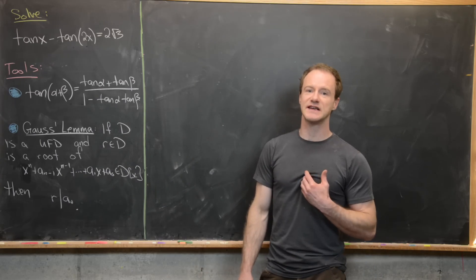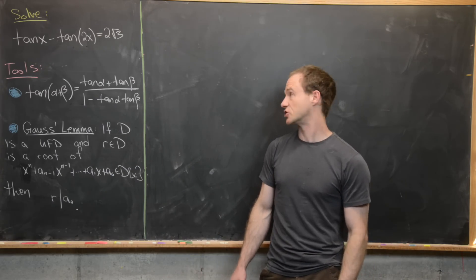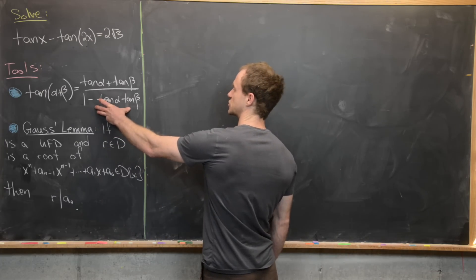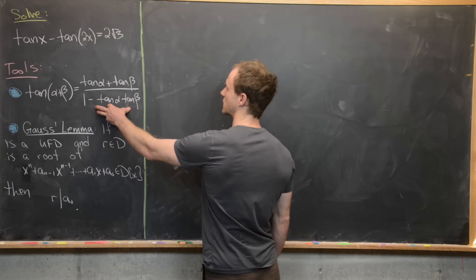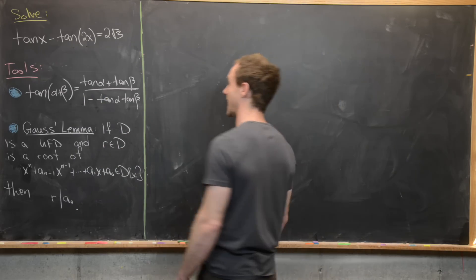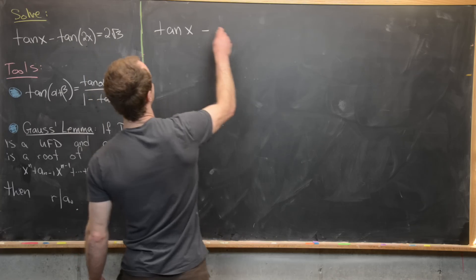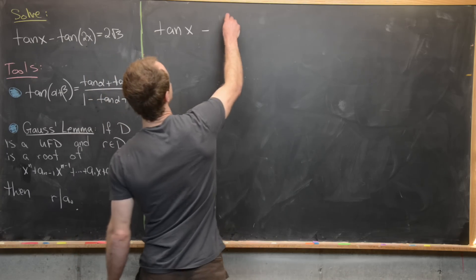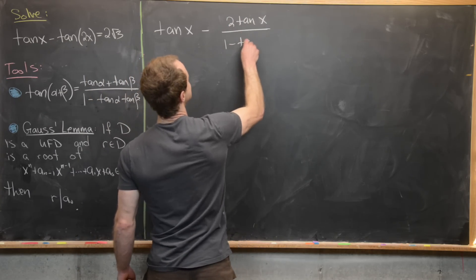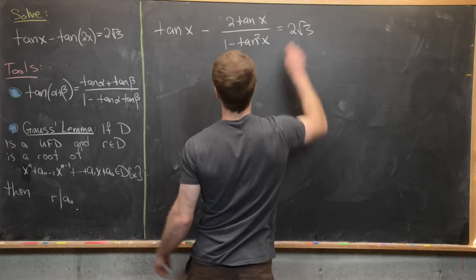This is a generalization of something you might be familiar with for polynomials with integer coefficients. So let's get going. We'll first transform the equation using the sum angle formula with alpha equals beta equals x, which changes the equation to tangent of x minus 2 times tangent of x over 1 minus tangent squared of x equals 2 root 3.